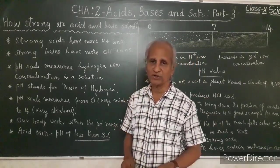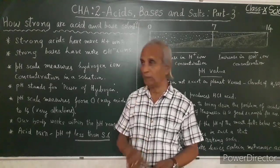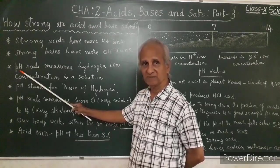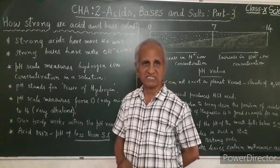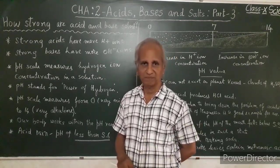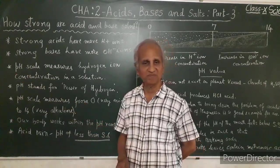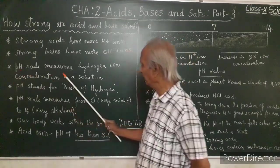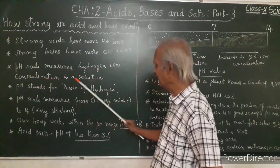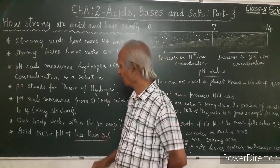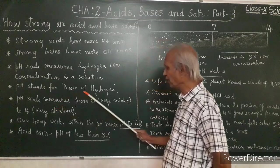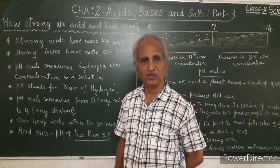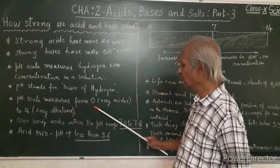Hence scientists have come out with a pH scale, small p capital H. pH scale, it's actually from German language, p is transferred potenz meaning power, power of hydrogen, how many hydrogen ions are there. pH scale measures hydrogen ion concentration in a solution. pH stands for power of hydrogen.